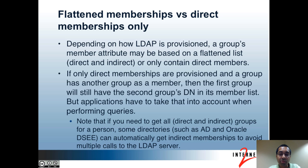Also note that in some directories like AD and the Oracle Directory Server, if you want to get all groups of a person, there are ways you can perform the query so that they would return all direct and indirect memberships. This would be useful to avoid multiple queries; otherwise you would have to get the direct groups first, then re-query to see if those groups are members of other groups, and if they are then re-query again — and that can become expensive.